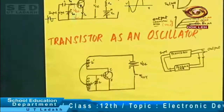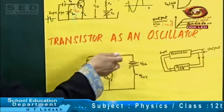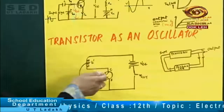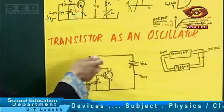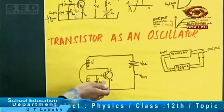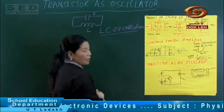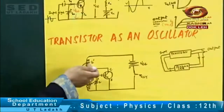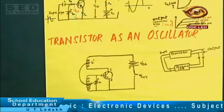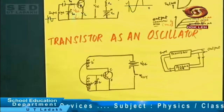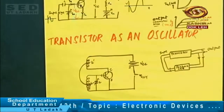Initially, when the key is closed and VCC is applied, current flows through the circuit. As the collector current IC increases, the coil L' which is inductively coupled transmits energy — this forward biases the transistor. As it increases, the output oscillations also increase — this continues until the saturation point, at which point the collector current starts to decrease.